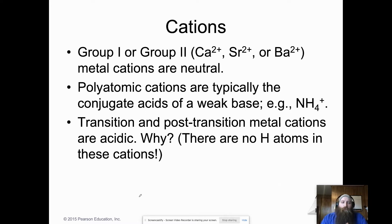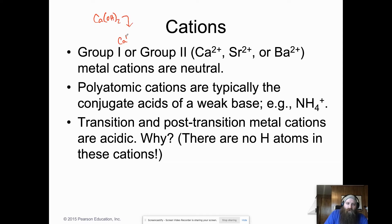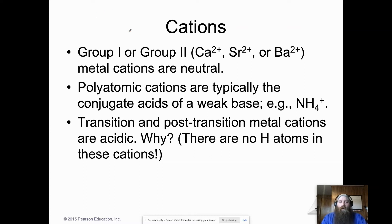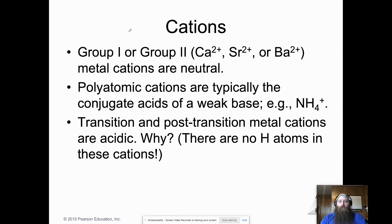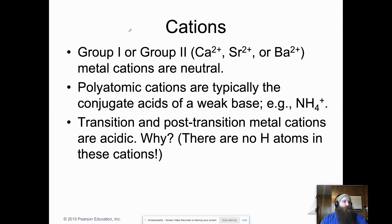For cations: Group 1 and Group 2 metal cations are neutral — for example, calcium from calcium hydroxide doesn't interact with water. Polyatomic cations are usually conjugate acids of a weak base, like ammonium. Transition and post-transition metal cations (like lead) are acidic because they have no hydrogen atoms.